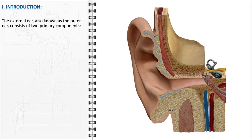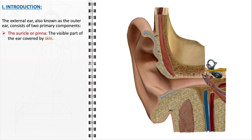The external ear, often referred to as the outer ear, plays a crucial role in the human auditory system. It consists primarily of two distinct parts. The auricle, or pinna, is the part of the ear most visible to us. Shaped somewhat like a leaf, the auricle is designed to capture sound waves from the environment. It has a complex structure with ridges and hollows which helps in directing sound into the ear. Its unique shape also assists in determining the direction from which a sound is coming, which is essential for spatial awareness.